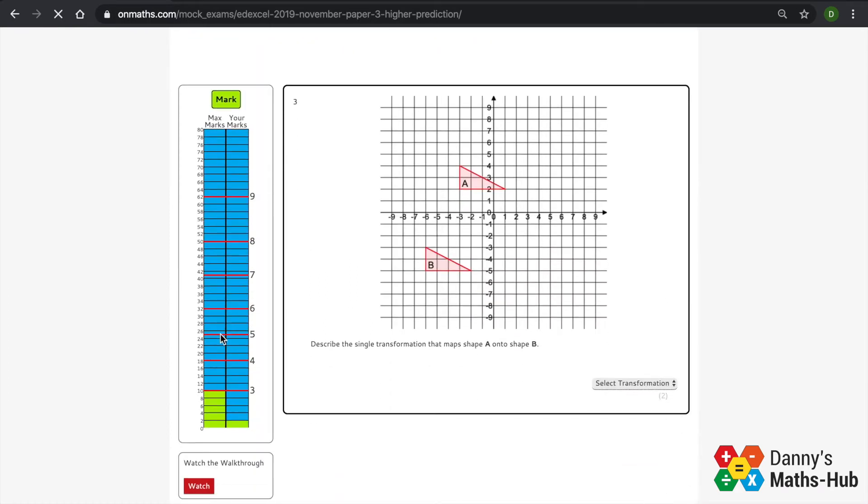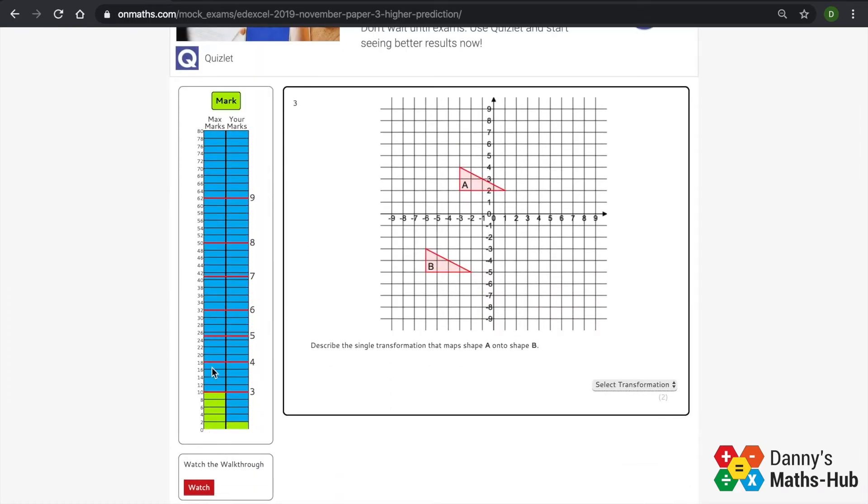Now when you start getting your questions right, you'll see you have two green bars coming along here. This side are all the questions you've done, and this side are all the points you've picked up. It actually shows you how close you're getting to each grade boundary, which I think is really good, so you can see how far off you were from a particular grade.